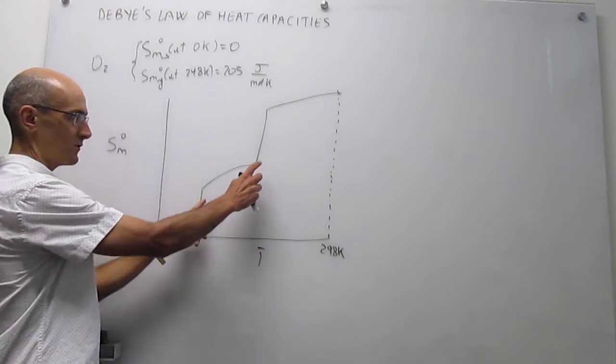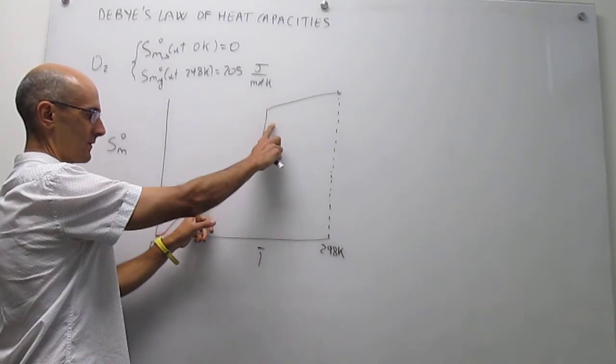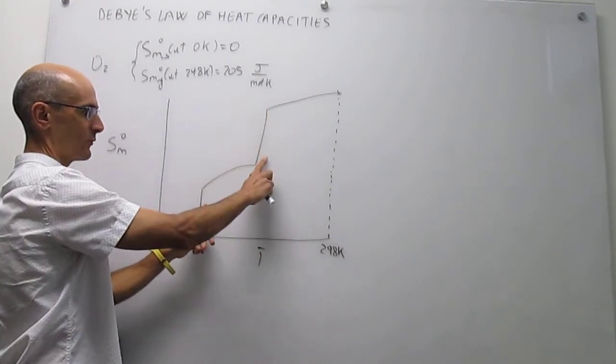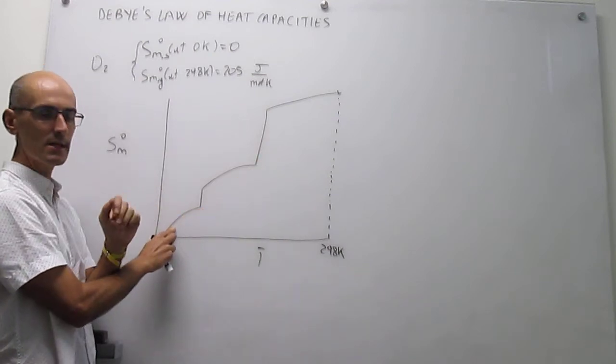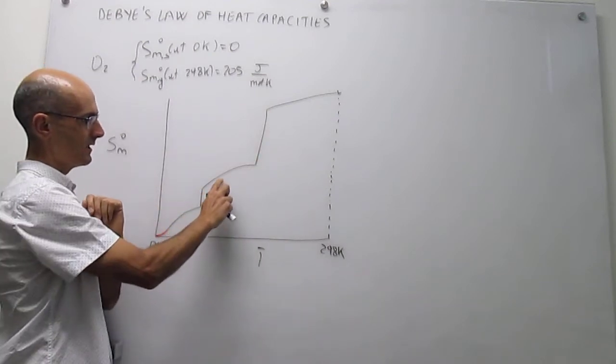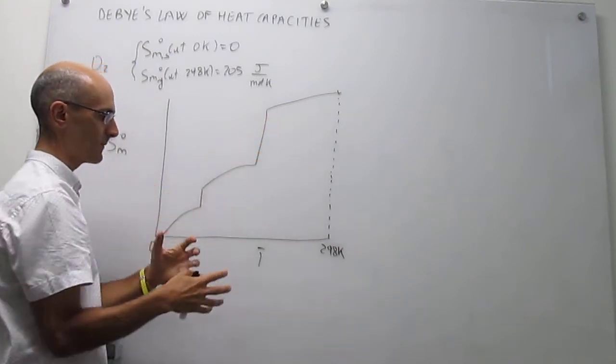So here you can clearly see the two phase transitions isothermal, so that is fusion, that is vaporization, and here you have the three heating steps: the heating of the solid, heating of the liquid, and heating of the gas.